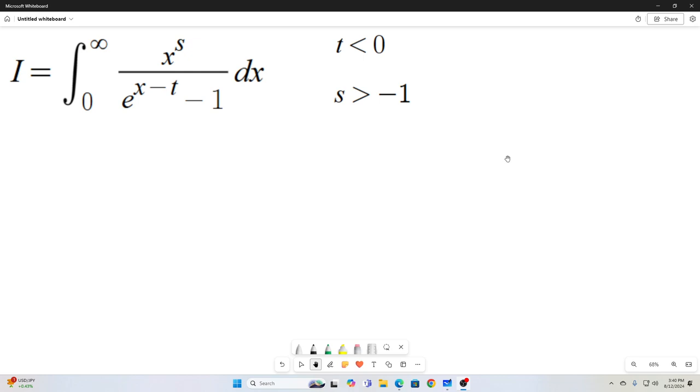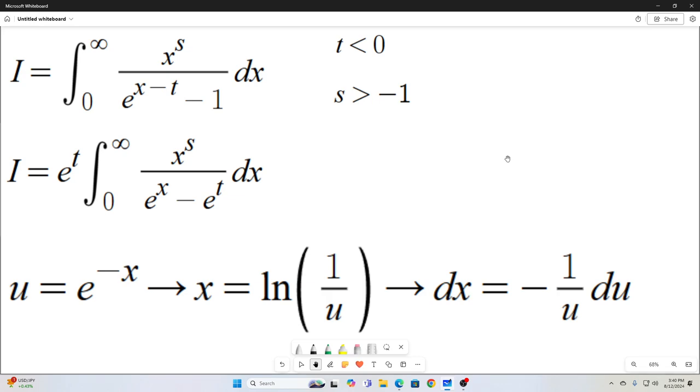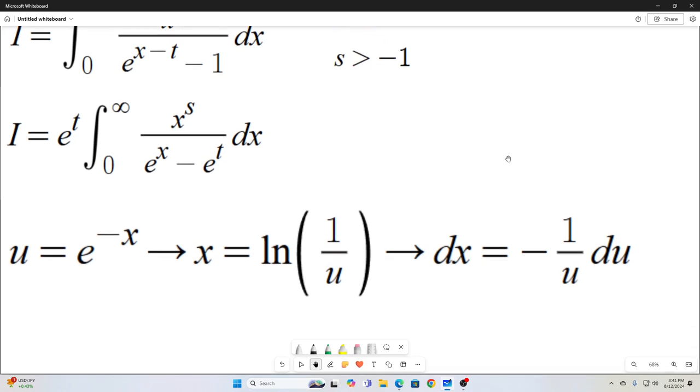All right, so the first step is we're just going to manipulate the integral a little bit. You can see I just multiplied the top and the bottom by e to the t. So now we have this. And then the next step is to make this substitution. We're going to let u equal e to the negative x and all the rest of that follows from that substitution.